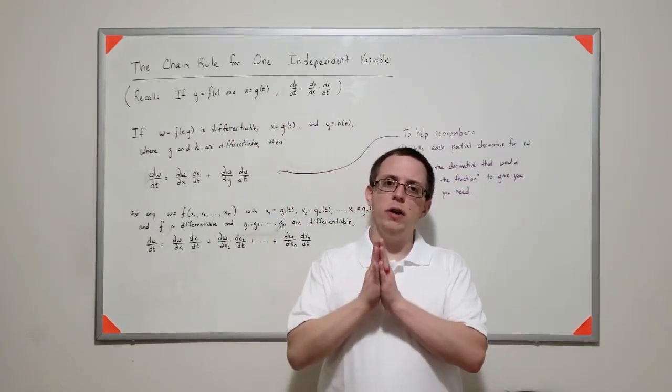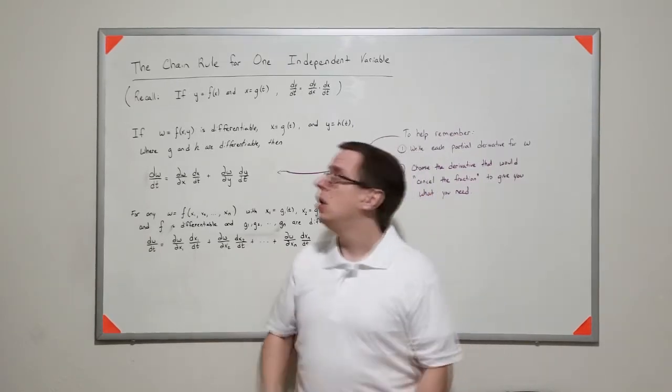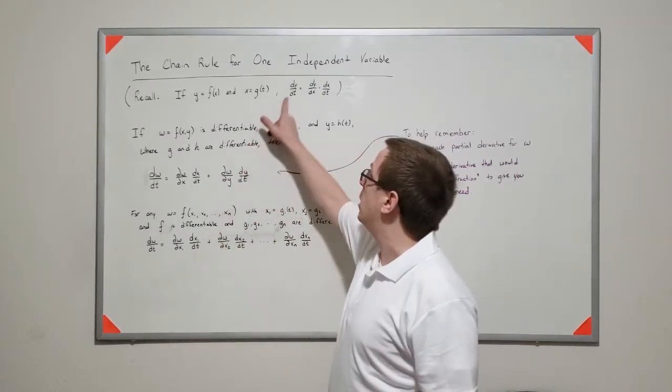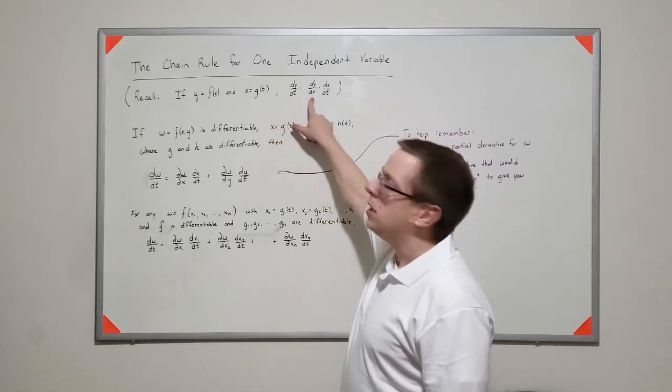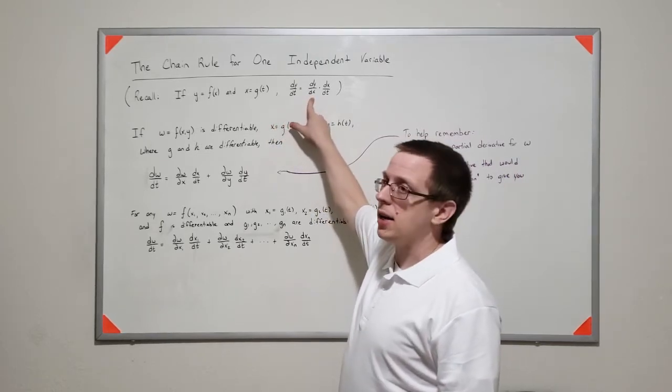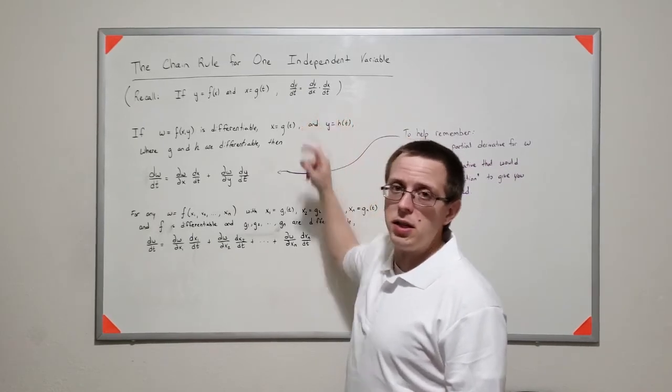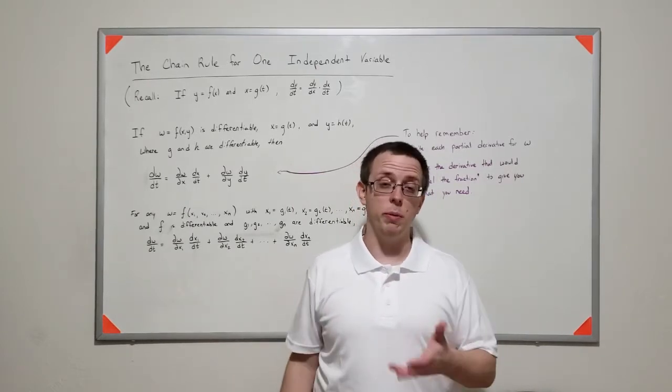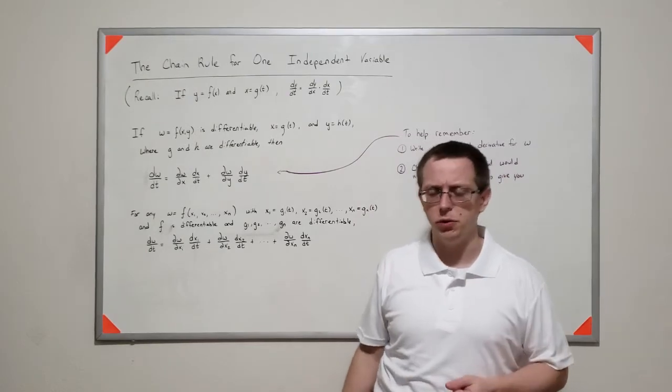then if we wanted to find the derivative of y with respect to t, we can use the chain rule to chain those derivatives together. We can say that the derivative of y with respect to t is its derivative with respect to x times the derivative of x with respect to t, chaining those together using the chain rule in the way that we remember doing it when we learned how to take derivatives in general.